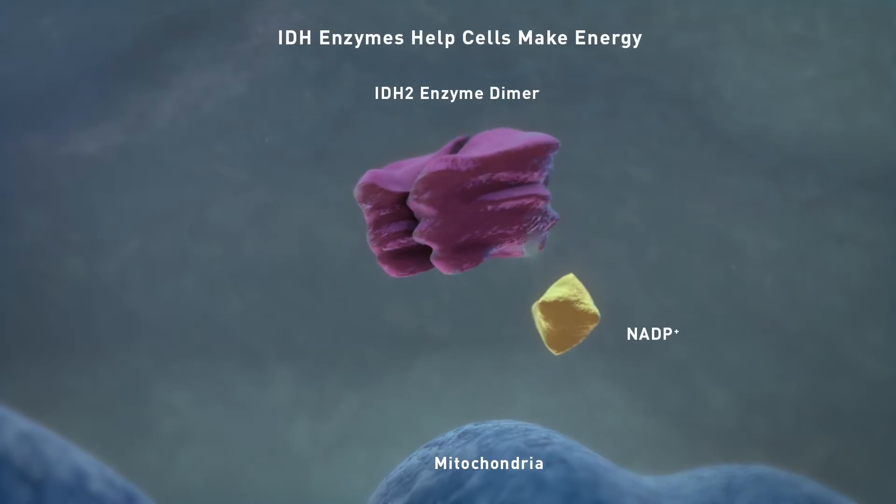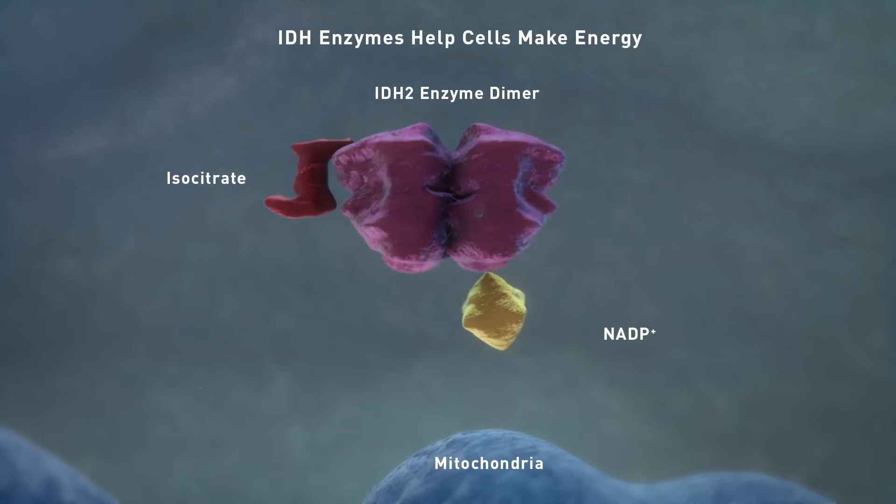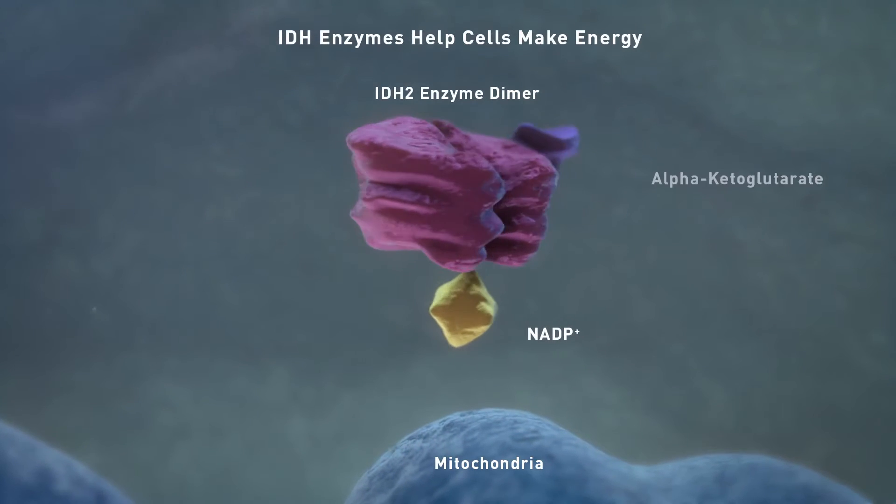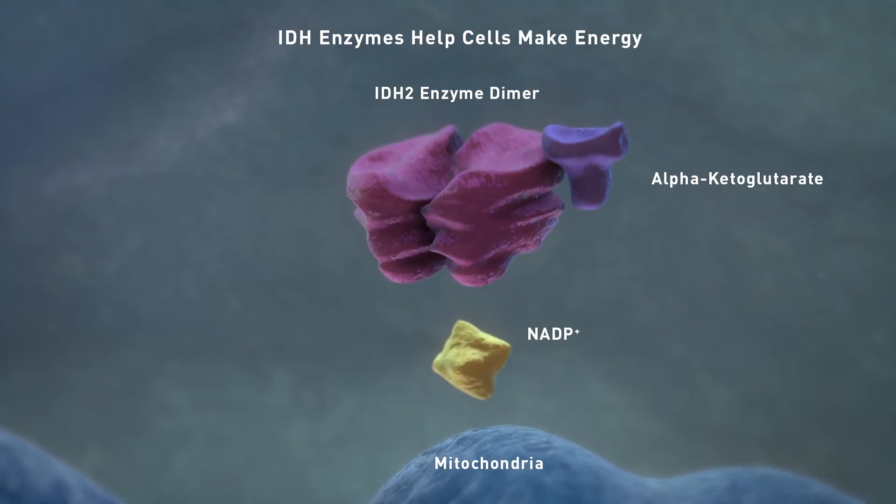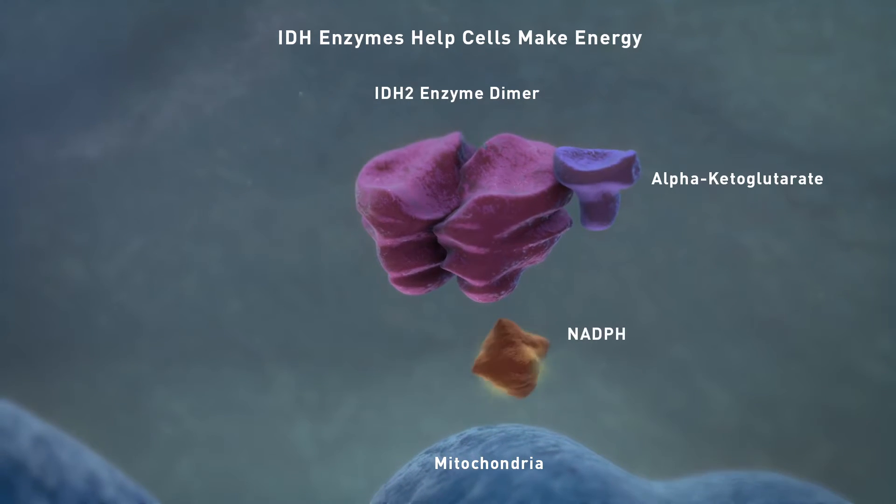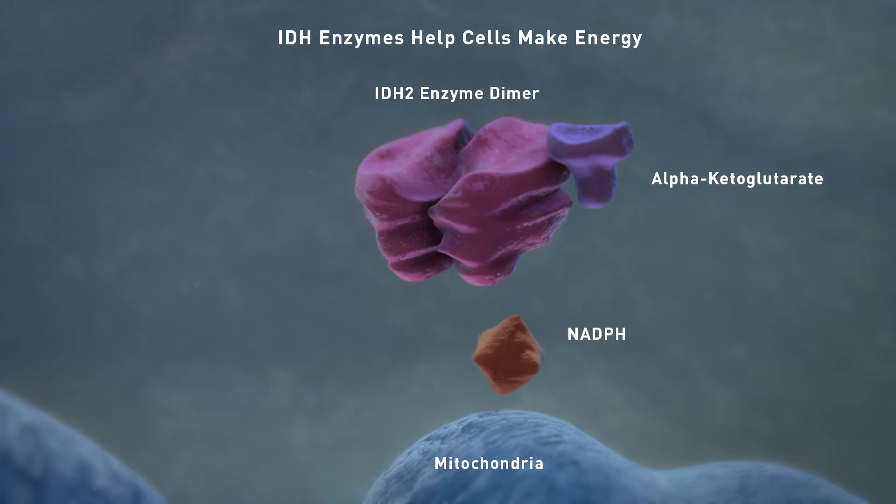IDH1 and IDH2 enzymes catalyze the conversion of isocitrate to alpha-ketoglutarate. This reaction requires NADP as a cofactor, which is converted to NADPH that can help protect cells from the toxic effects of reactive oxygen species.